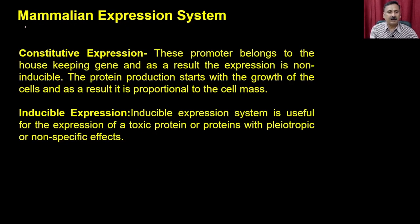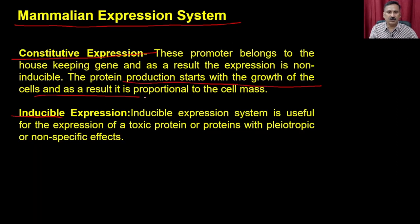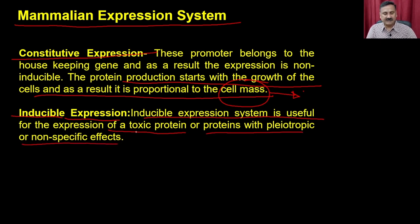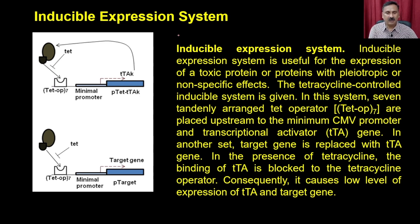As far as expression is concerned within the mammalian expression system, you have two options: constitutive expression or inducible expression. In constitutive expression, you use housekeeping gene promoters and protein production is proportional to cell mass — higher cell mass gives more protein. However, recovery of the protein is a difficult task when relying on constitutive expression. In inducible expression, you can use it for expression of a toxic protein or proteins with pleiotropic or non-specific effects. In the inducible expression system, you can use the Tet-On and Tet-Off system.